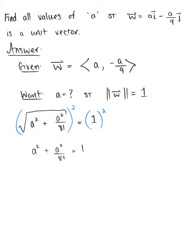If we get a common denominator thinking about a squared over 1, multiplying the numerator and denominator by 81, we are left with 81 a squared plus a squared all over 81 is equal to 1.